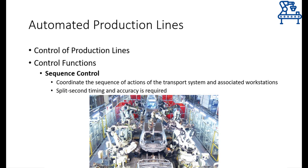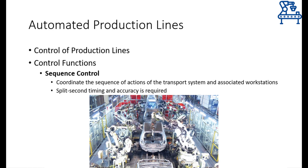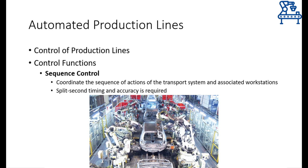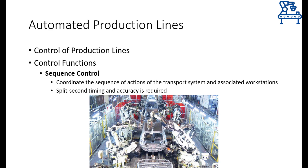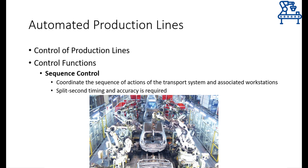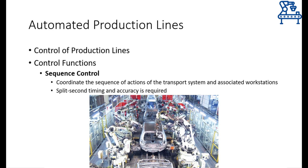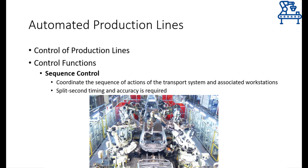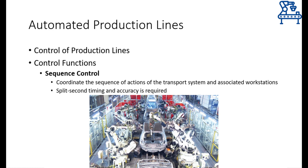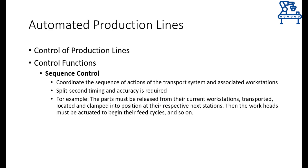Sequence control includes the control of every component of the work part transportation system and of workstations. As things are going about automatically, everything must be precisely timed and actuated. For fast moving production lines, timing and motion accuracy becomes more important. Typically, the sequence controller should identify the end of the operation by the workstation on the work unit, control the release of the part from the workstation, transport it, locate it at the next workstation, position it, and signal the workstation to start operation, and so on.